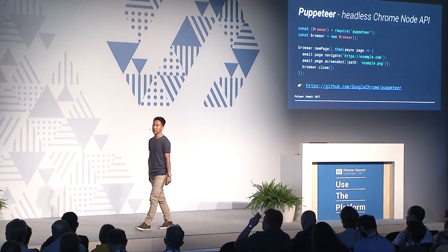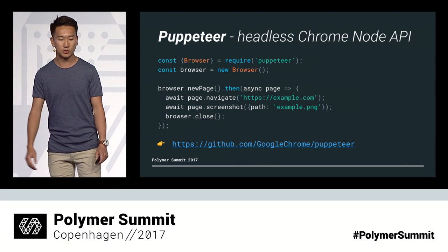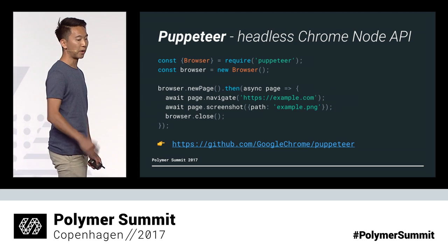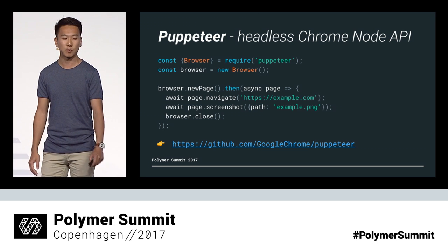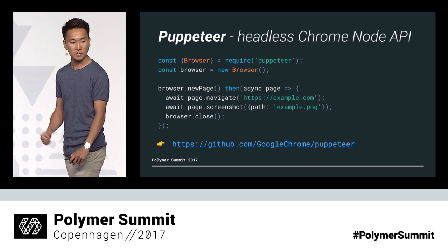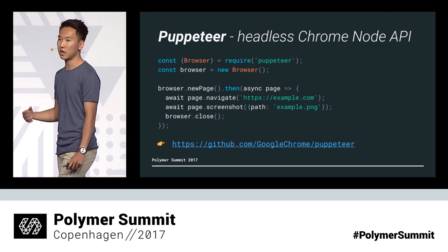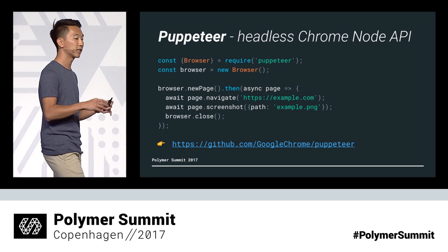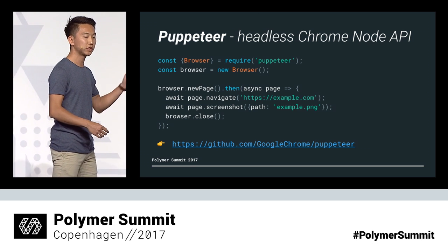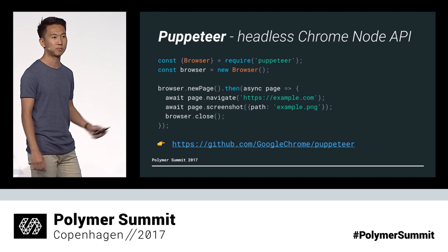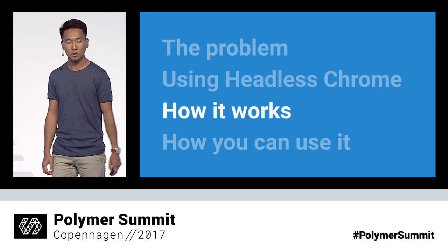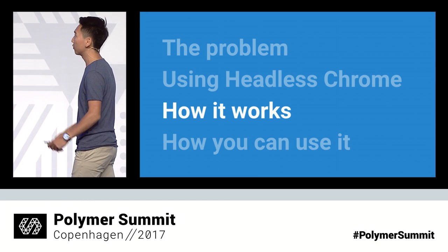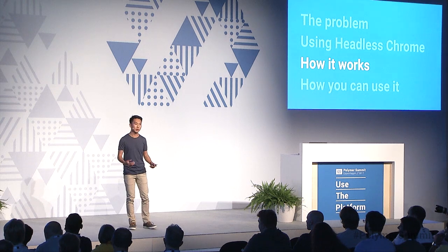Just a quick shout-out: if this all sounds really interesting to you and you would like to include headless Chrome in some other way in your tool chain, there's a brand new node library that was published just last week that exposes a high-level API to control Chrome, while also bundling all of Chrome inside that node package. So you can check it out on GitHub at google-chrome/puppeteer. We've looked at the high level of how headless Chrome can fit into your application to fulfill your SEO needs. Now it's time to dive into how it works.